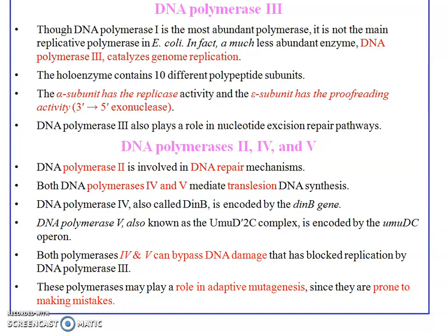DNA polymerase 3 is the chief replicating enzyme in E. coli. It catalyzes genomic replication and is also a holoenzyme with 10 different polypeptide subunits — alpha, beta, delta, epsilon, theta, eta, and others. The alpha subunit is the replicase and the epsilon subunit has the 3' to 5' exonuclease proofreading activity. Whenever a wrong nucleotide is incorporated, the proofreading activity removes it. DNA polymerases 2, 4, and 5 are used in DNA repair.